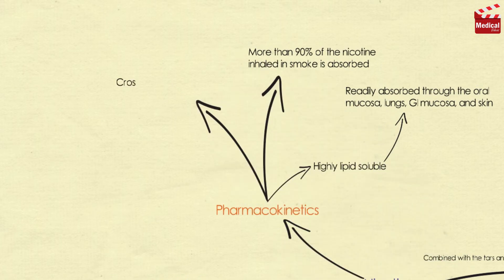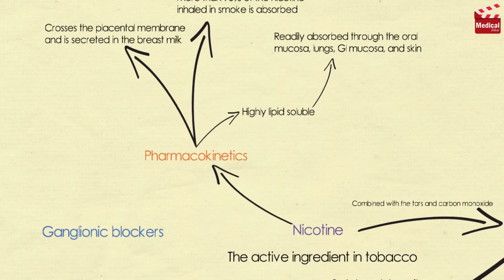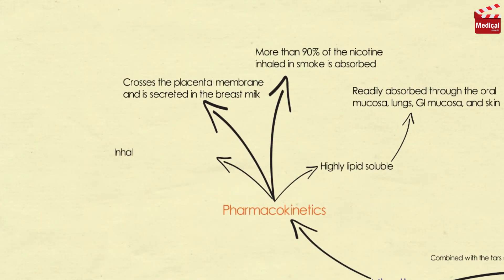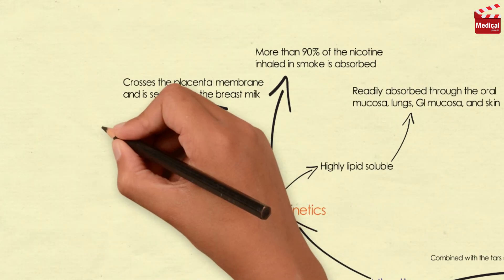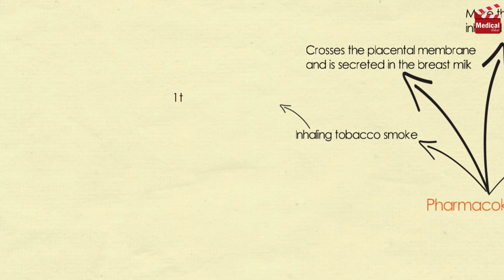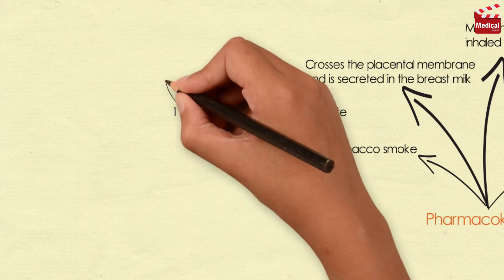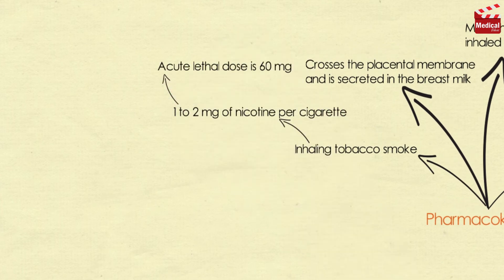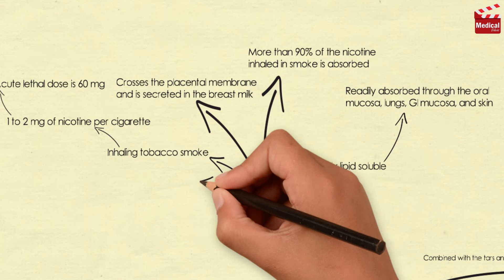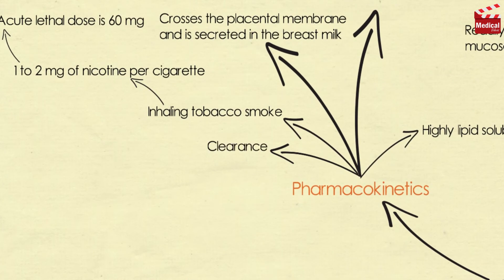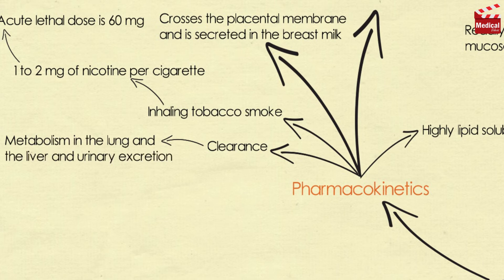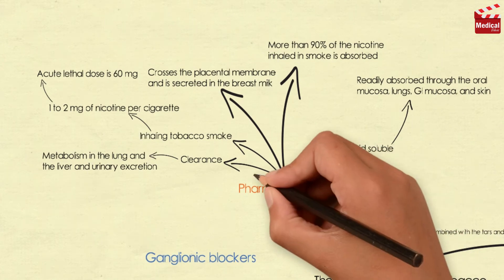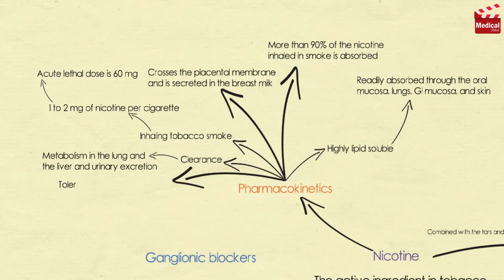Nicotine crosses the placental membrane and is secreted in breast milk. By inhaling tobacco smoke, the average smoker takes in one to two milligrams of nicotine per cigarette, and the acute lethal dose is 60 milligrams. Clearance of nicotine involves metabolism in the lung and the liver and urinary excretion. Tolerance to the toxic effects of nicotine develops rapidly, often within days.